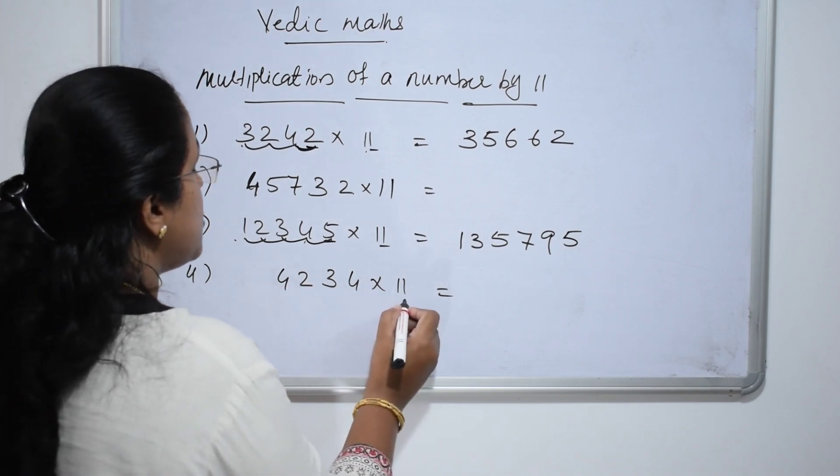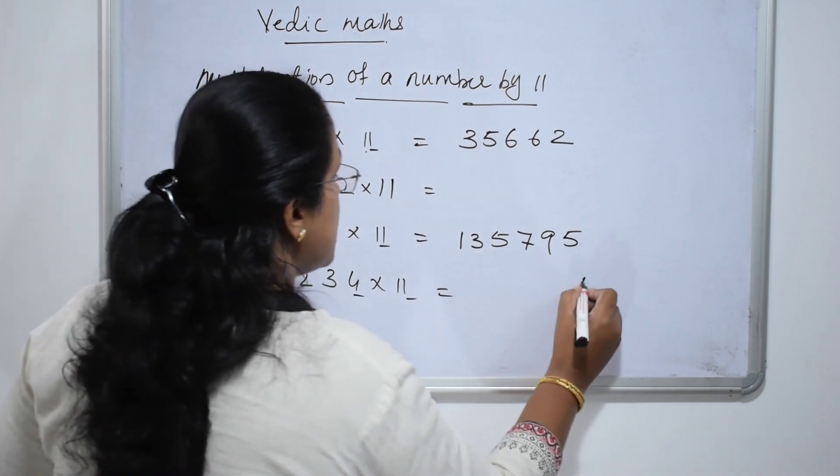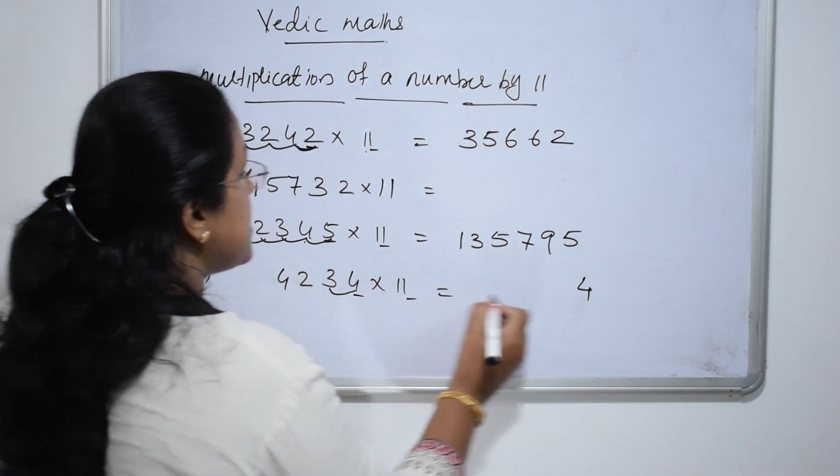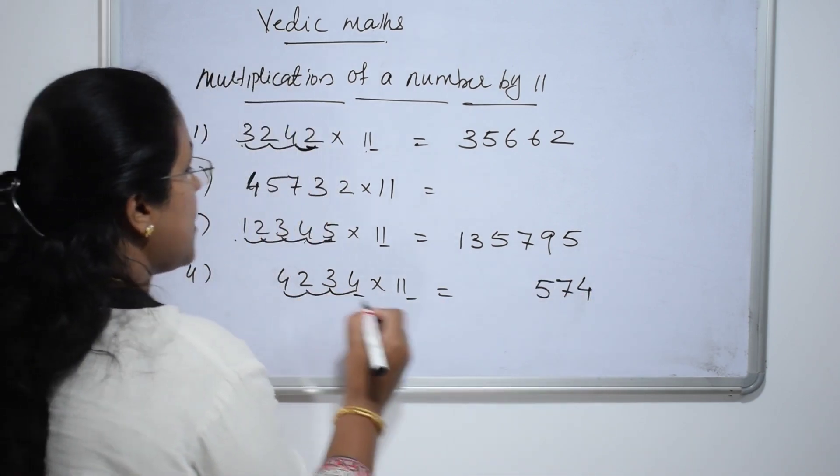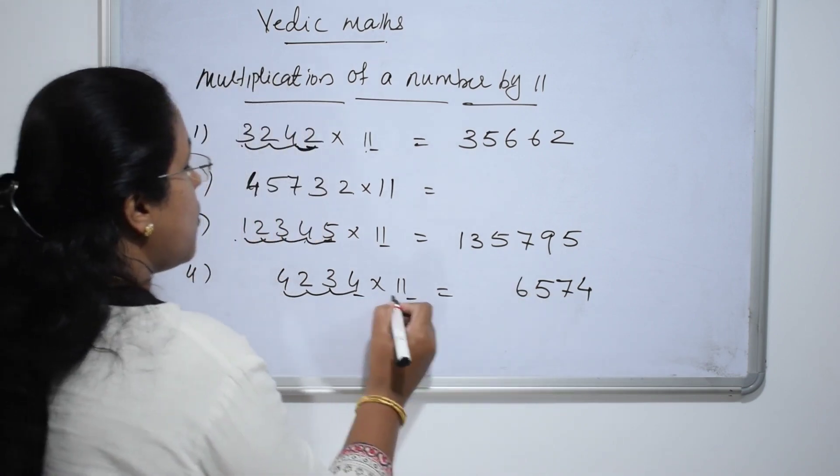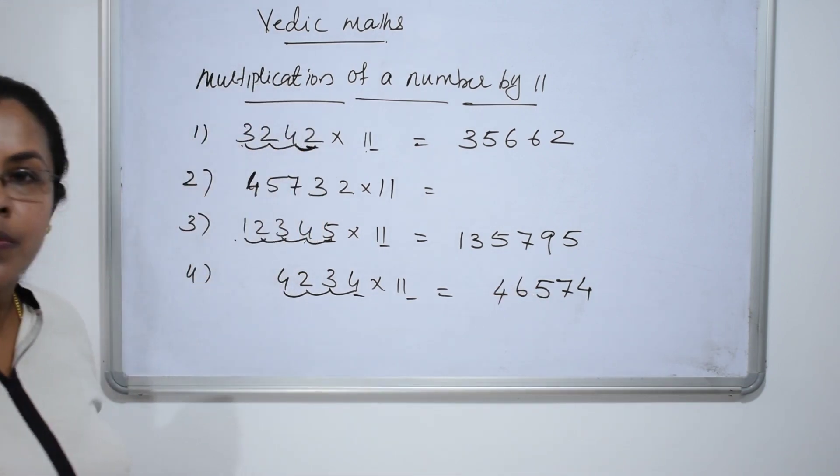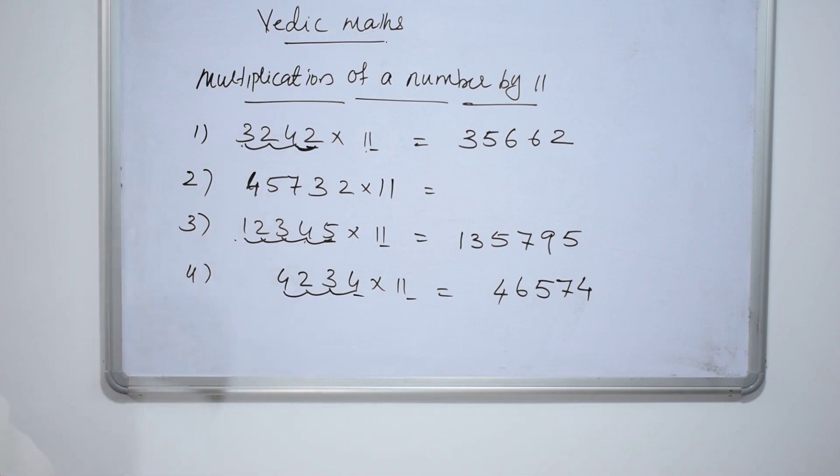4234 into 11. 4 times 1 is 4. 4 plus 3, 7. 3 plus 2, 5. 4 plus 2, 6. 4 times 1 is 4. Now, we will do this.